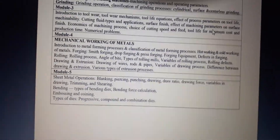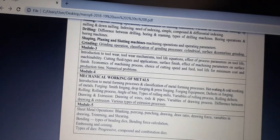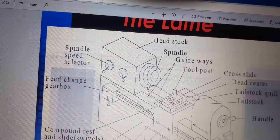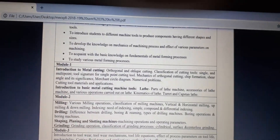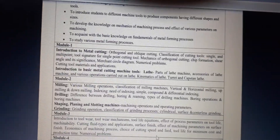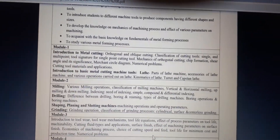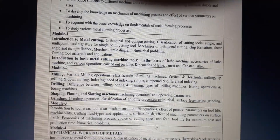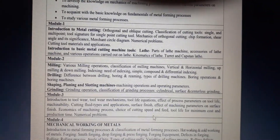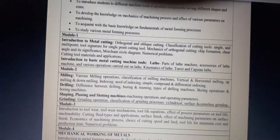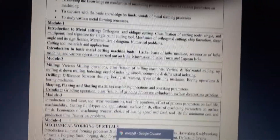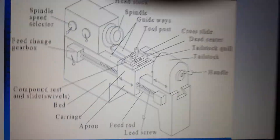We will now start with module one: introduction to metal cutting. We will first go to the basics of basic metal cutting machine tools. I am taking part B first in module one because those are the basics — if you understand those basics, then only you will understand the other things.